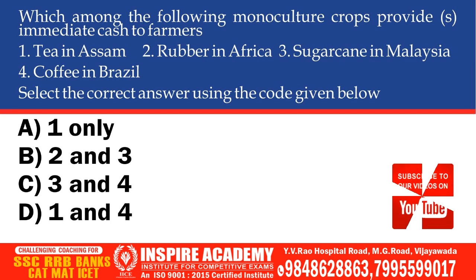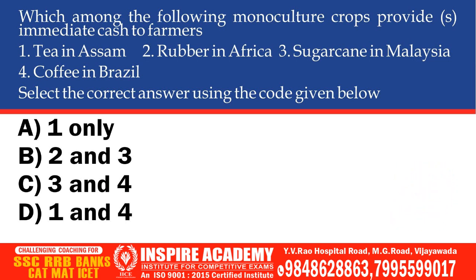Which of the following monoculture crops provides immediate cash to farmers? Options: Tea in Assam, Rubber in Africa, Sugarcane in Malaysia, Coffee in Brazil. Select the correct answer: Only option 1, Option 2 and 3, Option 3 and 4, Option 1 and 4. The correct option is 1 and 4.